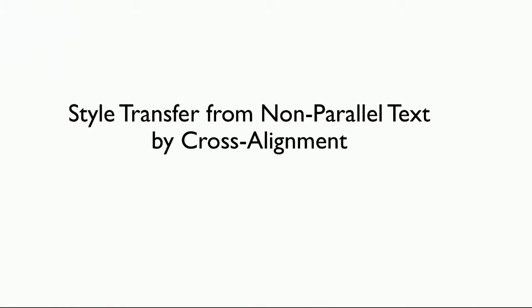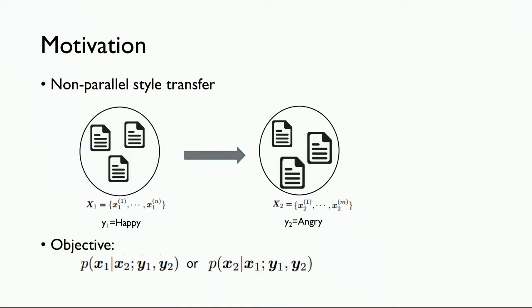The last paper is about style transfer from non-parallel text by cross-alignment. We are given two collections of documents, X1 and X2, each with a style label. Given one collection of documents with their style and a target style Y1, the goal is to generate the target documents. The objective is reformulated as two steps by introducing a latent variable Z representing the content of the documents: first, we infer the content Z from X using an encoder; then, given the style and content, we recover the documents.